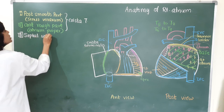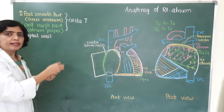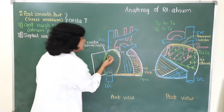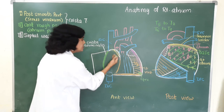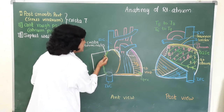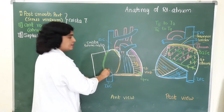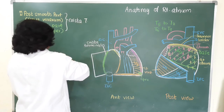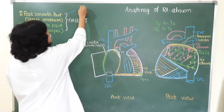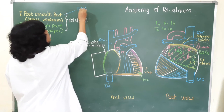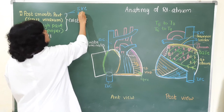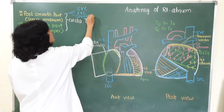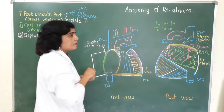Both the posterior smooth part and the anterior rough part are separated by the crista terminalis. The septal wall shows features of the interatrial septum from the right side. The posterior smooth part lies behind the crista terminalis.